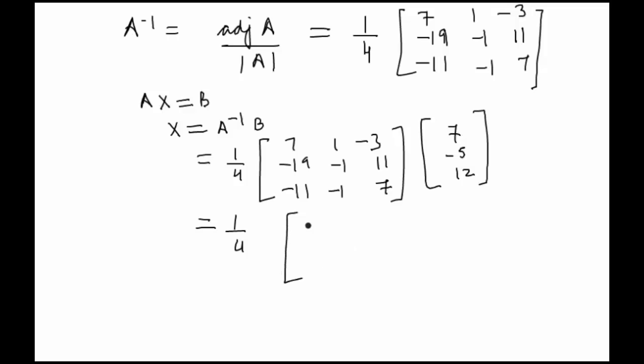Which gives us 1 by 4 times the matrix 8, 4, and 12, which equals 2, 1, and 3. This was the value of capital X, which was x, y, and z. So x will be equal to 2, y equal to 1, and z is equal to 3. This will be the solution to the problem.